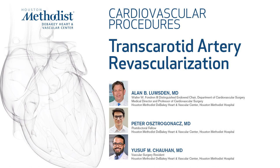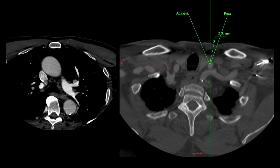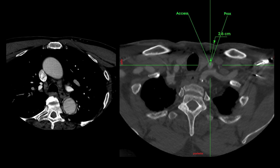A 67-year-old male was transferred from an outside hospital with temporary right hemiparesis and 60% stenosis on the left ICA. CTA showed subacute left frontal ischemia, occluded left vertebral artery, and calcified basilar artery.